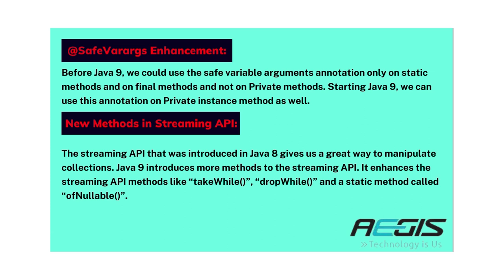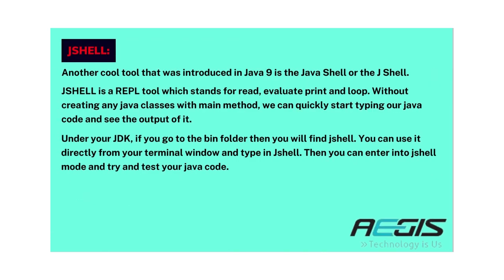Next are new methods in the Streaming API. The streaming API introduced in Java 8 gives us a great way to manipulate collections. Java 9 introduces more methods such as takeWhile(), dropWhile(), and a static method called ofNullable(). Another cool tool introduced in Java 9 is JShell — a REPL tool which stands for Read, Evaluate, Print, and Loop. Without creating any Java class with a main method, we can quickly type Java code and see the output. Under your JDK bin folder you will find jshell, which you can launch from your terminal and enter jshell mode to test your Java code.